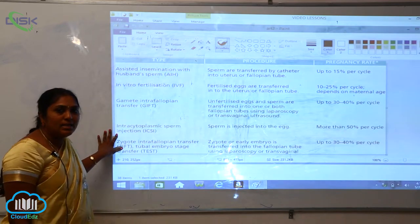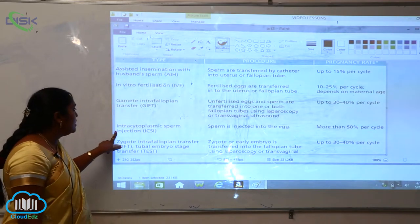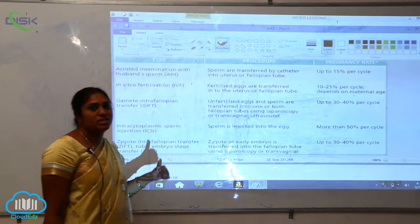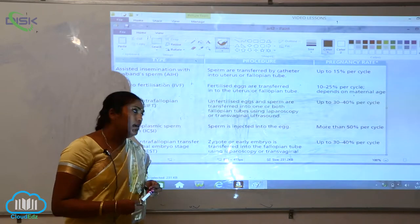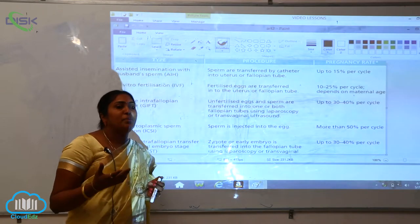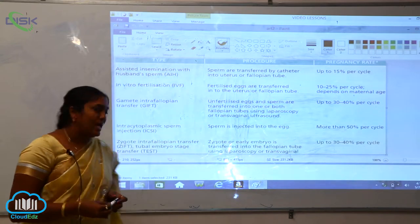Next is ICSI, intracytoplasmic sperm injection. The sperm is injected into the egg, and there's more than 50 percent chance per cycle.